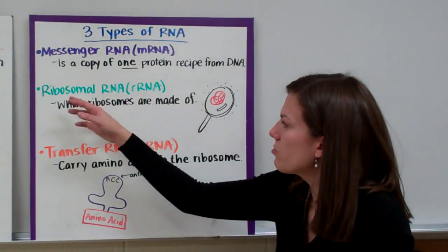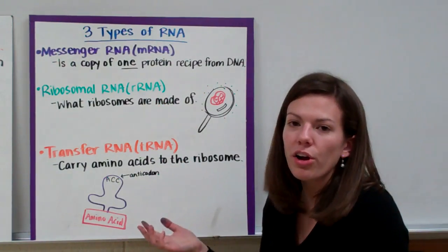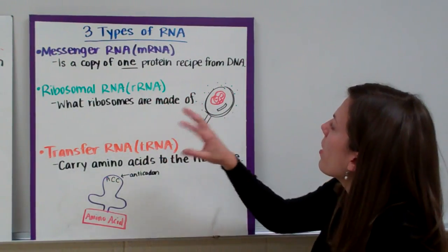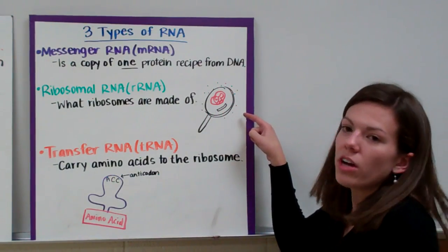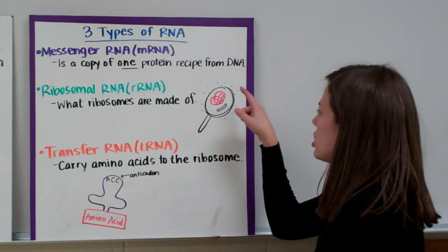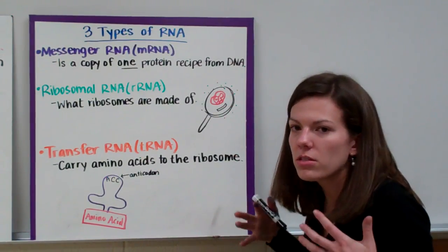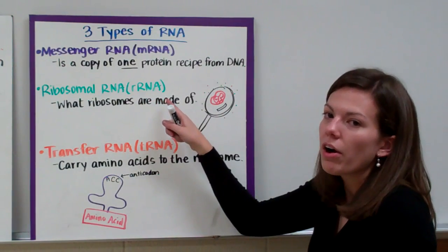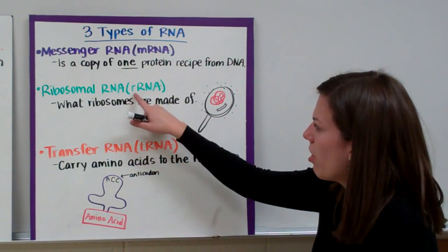Our next type of RNA is ribosomal RNA, and ribosomal RNA is what our ribosomes are made of. From far away, ribosomes look like these small dots. But if you actually zoom into a ribosome, it looks like a strand of spaghetti that's been squished together. And that strand is made of ribosomal RNA, abbreviated rRNA.